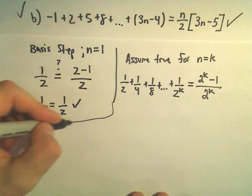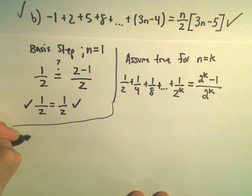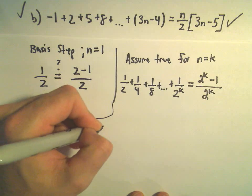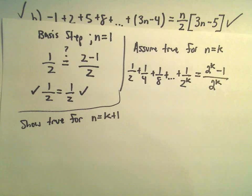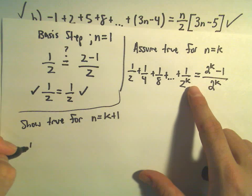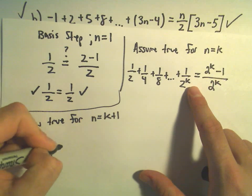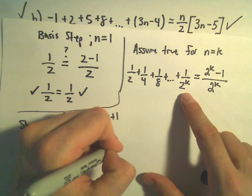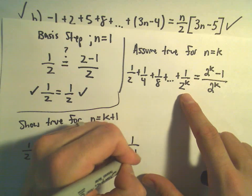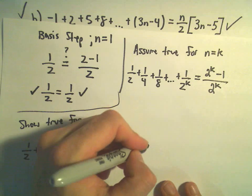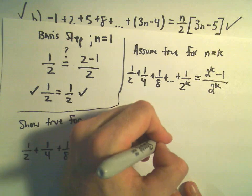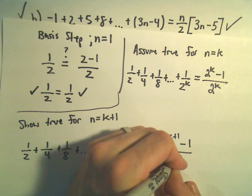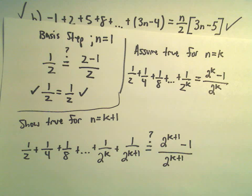And what we have to do at this point is we have to show that it's true for the value of n equals k plus 1. Well, if we plug in k plus 1 into our formula we'll have 1 half plus 1 fourth plus 1 eighth, we'll have 1 over 2 to the k plus 1 over 2 to the k plus 1, and in that case I'm wondering, would that be equal to 2 to the k plus 1 minus 1 over 2 to the k plus 1?